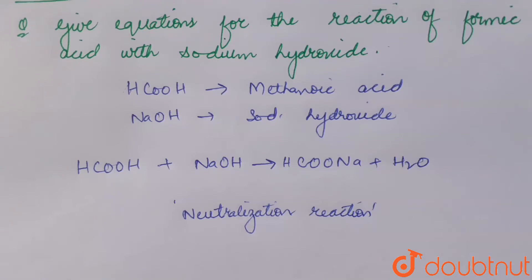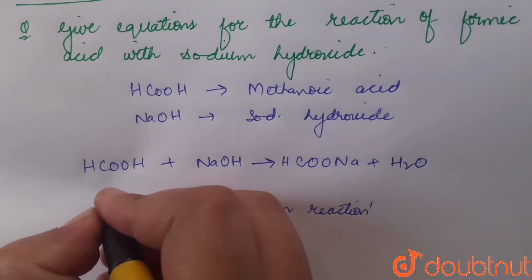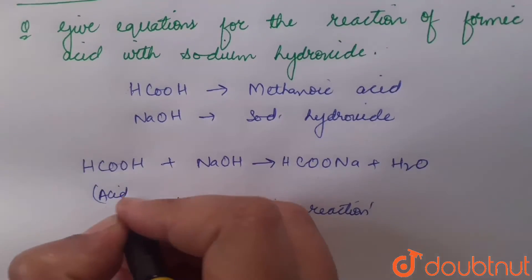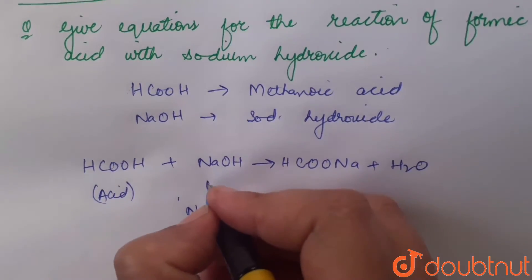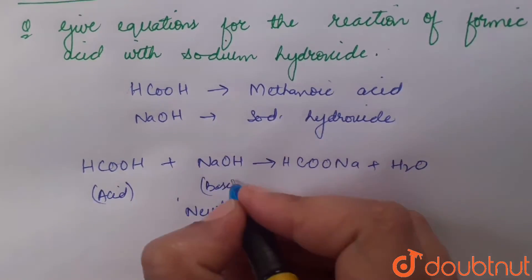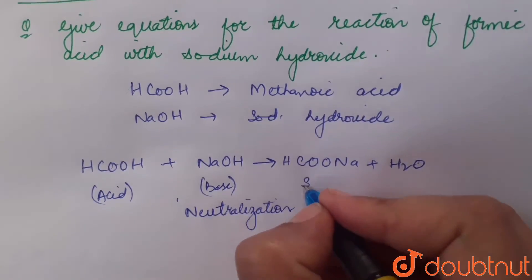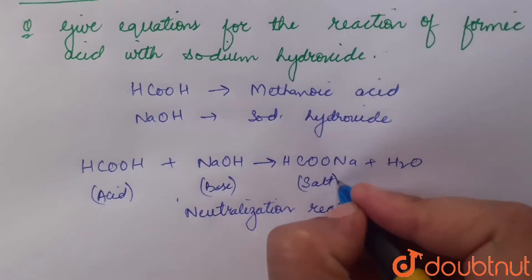Neutralization reaction or acid-base reaction. As in this reaction, formic acid, as the name suggests, is the acid. It reacts with sodium hydroxide which is a base, and they result in the formation of salt, that is sodium ethanoate, along with water molecules.